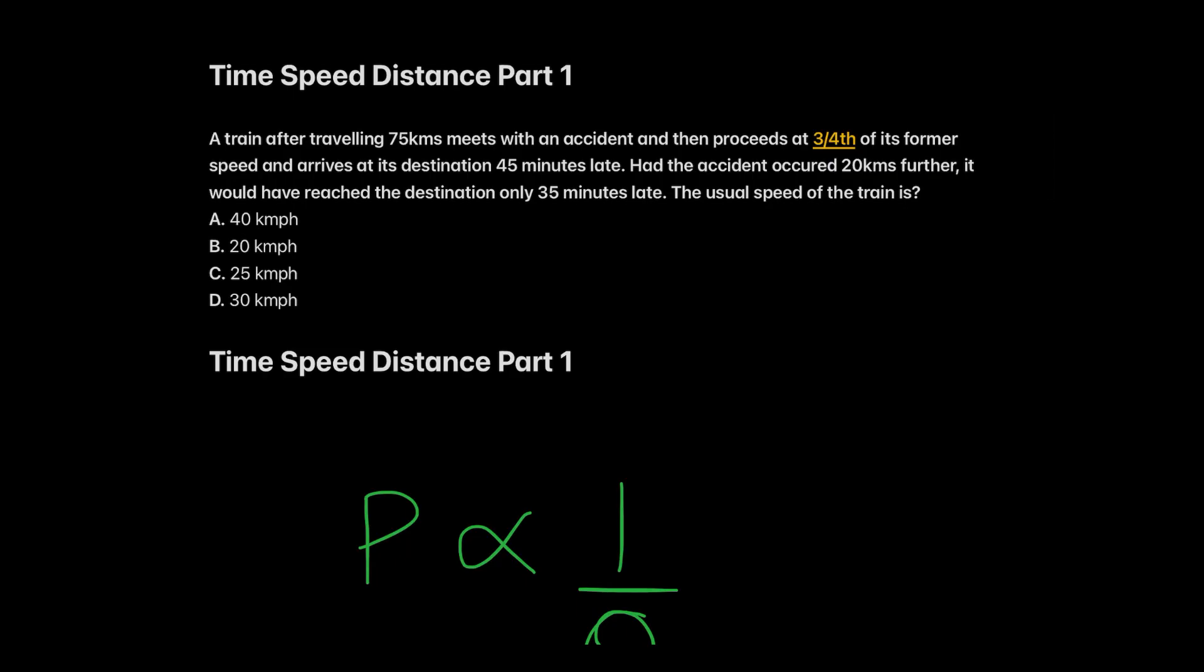Here's the question on your screen. A train after traveling 75 kilometers meets with an accident and then proceeds at 3/4 of its former speed and arrives at its destination 45 minutes late. Had the accident occurred 20 kilometers further, it would have reached the destination only 35 minutes late. So you have to find out the usual speed of the train. Options are given to you and this kind of question will be easily found in any book or on internet as well. Try to figure out the answer on your own and wait for the upcoming video for its solution. I would assure you that the solution would be only few minutes long and would help you understand the formula and use that concept instead of just mugging up formulas and going through long extensive simultaneous equations.